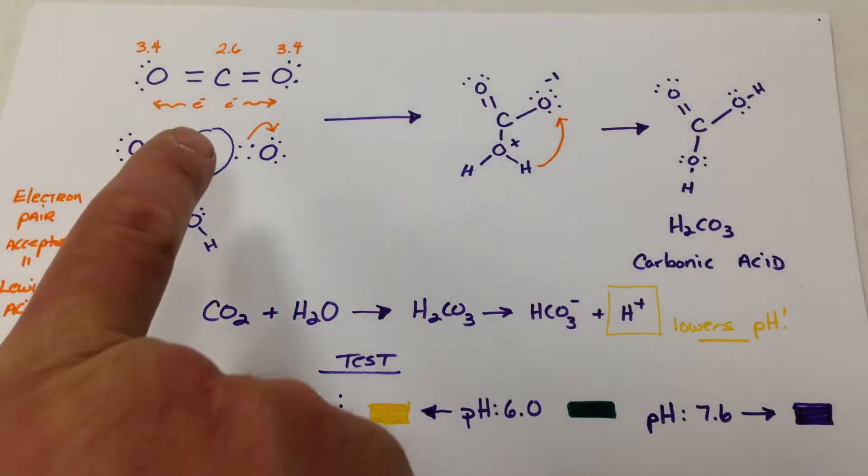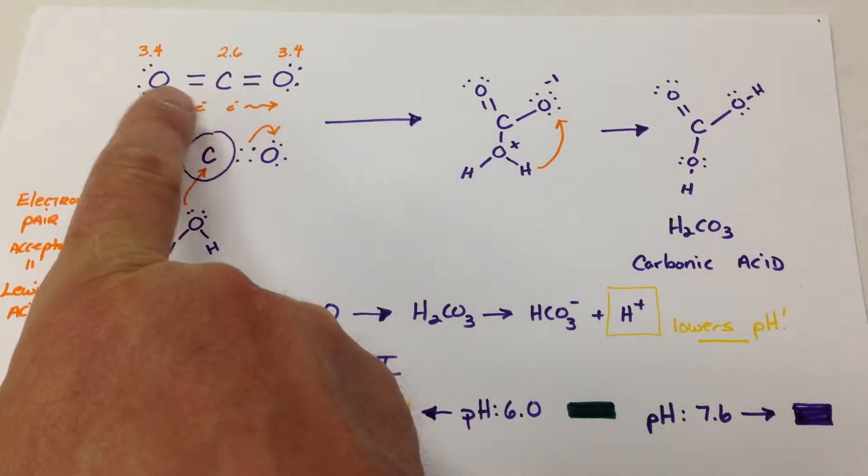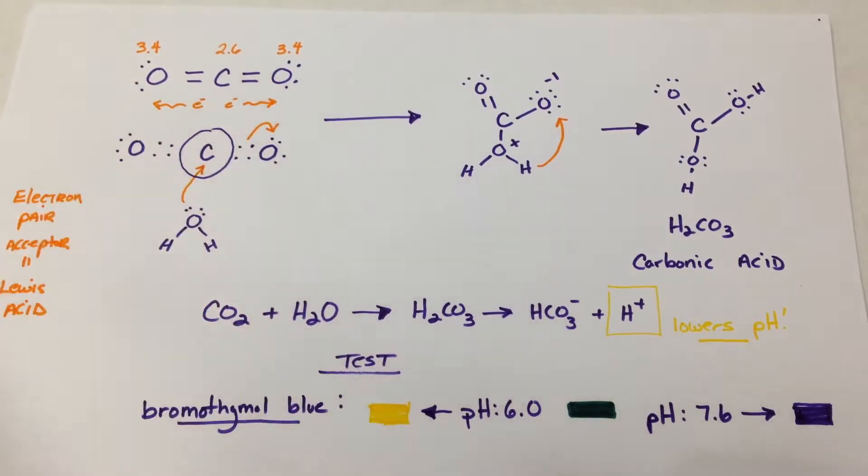If we look at our CO2 molecule, we know that it's very linear because there's no lone pairs of electrons to bend its VSEPR shape downward, so it's linear, which makes it nonpolar.